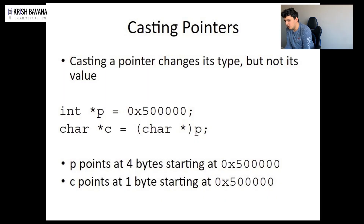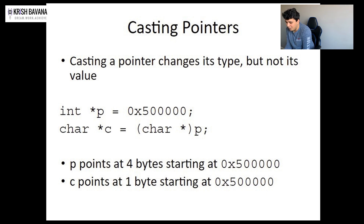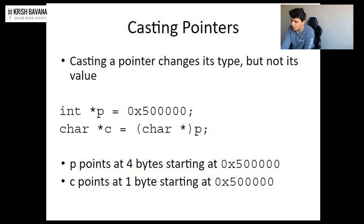Now let's talk about casting pointers. Casting is a very common practice in many languages, but casting only changes the type — it can never change the value. For example, if we have int pointer p equals 0x50000 and we convert it to a char pointer, nothing changes in terms of value. The int pointer p has four bytes starting at that address, while the char pointer points at one byte. Casting changes the type, which means the byte sizes will differ.